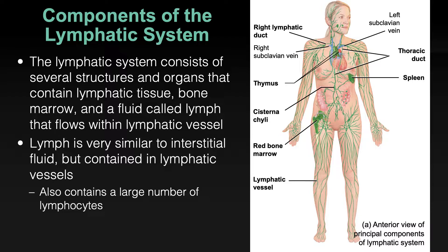Lymph bears resemblance to interstitial fluid, or ISF — the fluid that exists between cells, not in cells and not in the blood. If you took a tissue out, cells are close together but there's a small amount of fluid spreading between them. Interstitial fluid is what that's called, and it's similar to lymph, but it doesn't contain lymphocytes or other white blood cells.